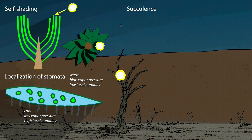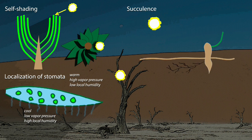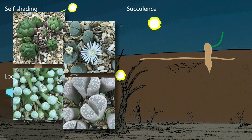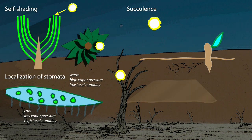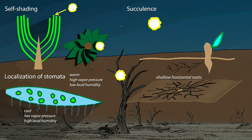Succulents — the storing of water in fleshy leaves — is another common strategy of desert plants. This is most common in environments where rainfalls might be sparse but are predictable, such as the winter rainfall regimes common in Mediterranean climates, like the succulent karoo of South Africa. Succulence is usually accompanied by a particular type of root structure: roots of succulent plants spread laterally and are located superficially below the soil surface. This enables the plant to capture sparse rainfall over a wide surface area so that it can be transported through the roots and stored in the leaves. This often goes along with other means of reducing evaporation, such as the fluting or self-shading already described.